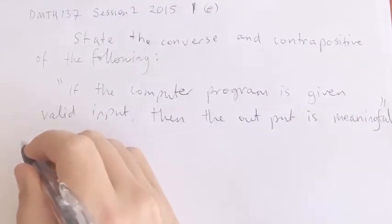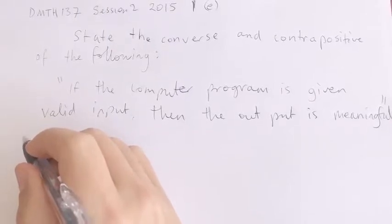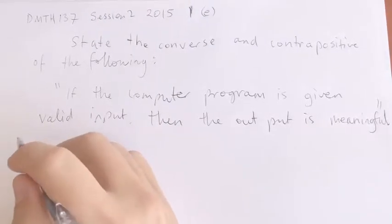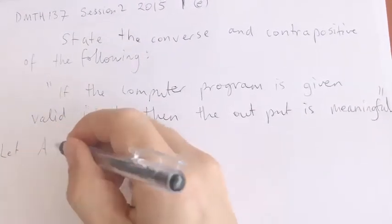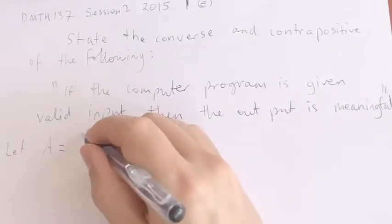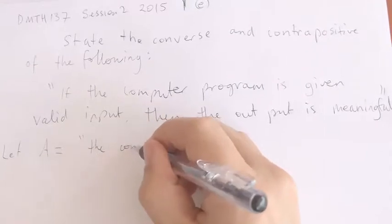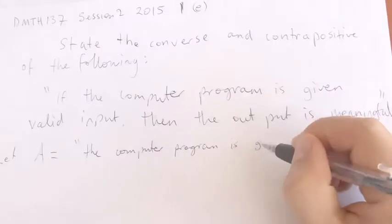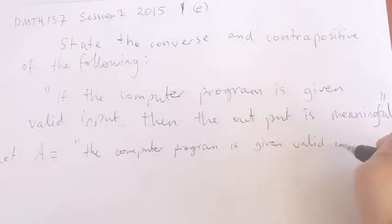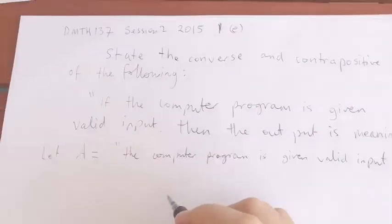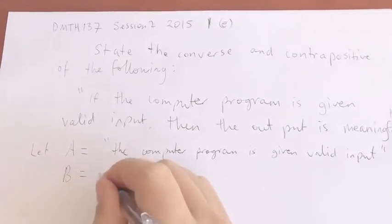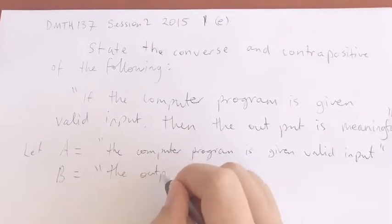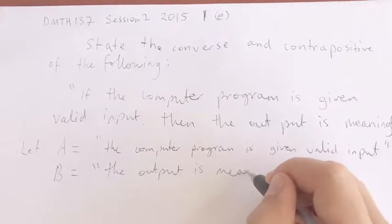So can you see how A implies B, another way of saying that is if A then B. So in our statement, the if is the computer program is given valid input. So let A be the statement that the computer program is given valid input. And let B, so that's the then, B the output is meaningful.